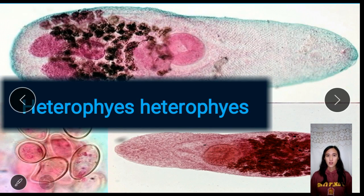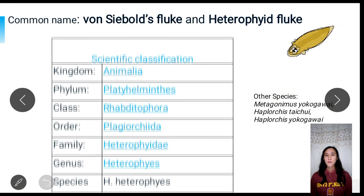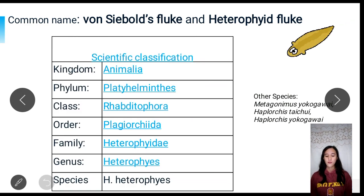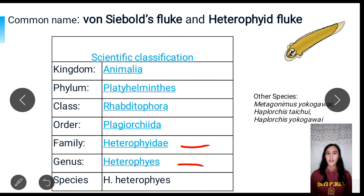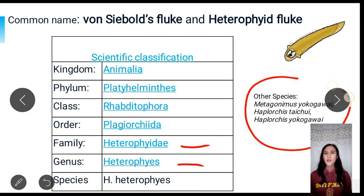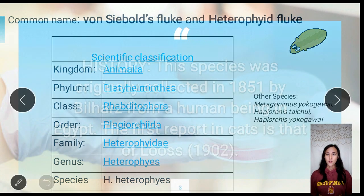Today, I will be talking about another trematode that inhabits the intestines of man, which is Heterophyes heterophyes. It is commonly called von Siebold's fluke or Heterophaeid fluke. Its scientific classification shows that it falls under the family Heterophaeididae and the genus Heterophyes. There are many other species of Heterophaeid, but the major species are Metagonimus yokogawai, Haplorchis taichui, and Haplorchis yokogawai.